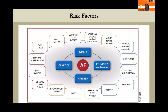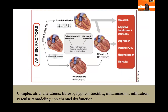Risk factors for AF include non-modifiable factors in the inner ring — genetics, gender, aging, and ethnicity — and modifiable factors in the outer ring including cardiovascular diseases such as heart failure, coronary artery disease, vascular and valvular heart diseases, obstructive sleep apnea, obesity, COPD, acute illness, surgery, and chronic kidney disease. The two main pathophysiological changes are hypercoagulability and structural remodeling — particularly left atrial fibrosis, hypo-contractility, inflammation, vascular remodeling, and ion channel dysfunction.